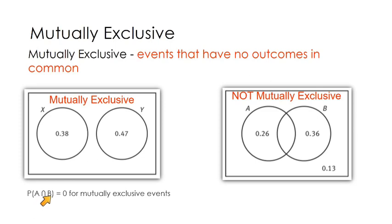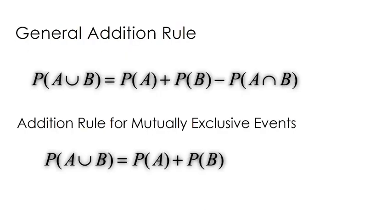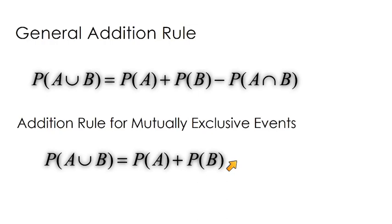For mutually exclusive events, the probability of A and B is zero — it's impossible for both events to happen. For not mutually exclusive events, the probability of A and B is not zero. Here's the general addition rule: the probability of A or B equals the probability of A plus the probability of B minus the probability of A and B. If the events are mutually exclusive, that minus term is just minus zero, so you can simply add: the probability of A or B equals the probability of A plus the probability of B.